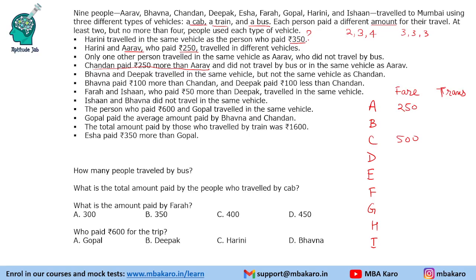Bhavana paid 100 more than Chandan, so that means Bhavana paid 600 rupees. And Deepak paid 100 less than Chandan, so Deepak is paying 400 rupees.